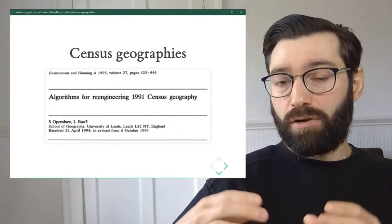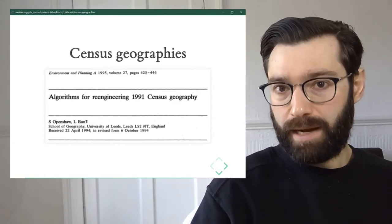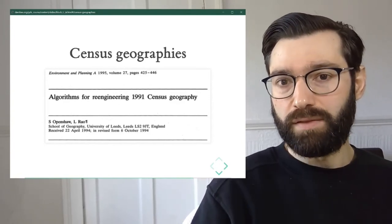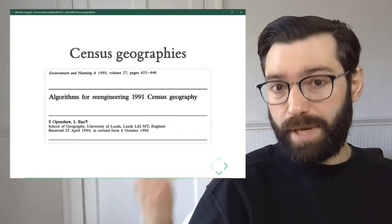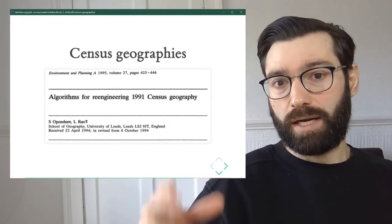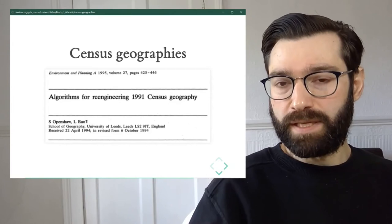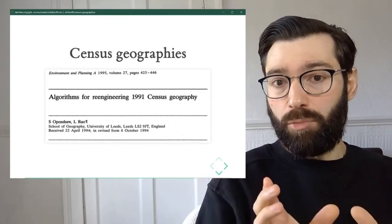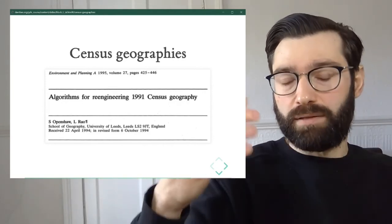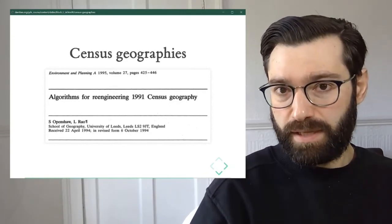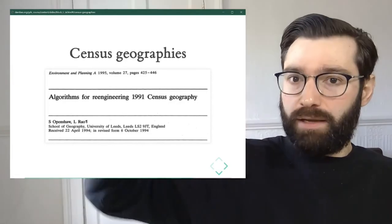And then these output areas are gradually aggregated into larger and larger areas into what's called lower layer super output areas, LSOAs, which you have worked with in this course. And then LSOAs are aggregated into middle super output areas, MSOAs, and then MSOAs are aggregated into local authority districts. And this is a hierarchical set of geographies in a way that output areas are combined into LSOAs and LSOAs are combined into MSOAs and MSOAs are combined into local authority districts. It's almost like a set of Russian dolls, where the smallest ones fit perfectly into the larger ones, in a hierarchical way.